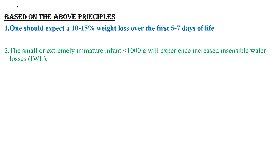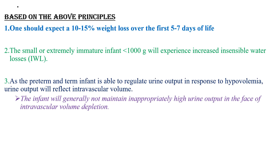The small or extremely immature infant will experience increased insensible water losses. As the preterm and term infant is able to regulate urine output in response to hypovolemia, urine output will reflect intravascular volume. We can monitor intravascular volume based on urine output. The infant will generally not maintain an inappropriately high urine output in the face of intravascular volume depletion. We expect urine output of at least 0.5–1 ml per kg per hour.